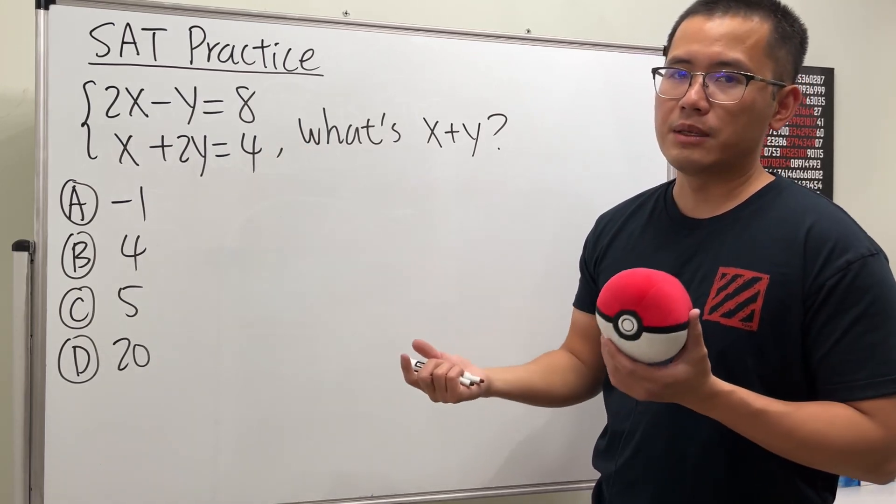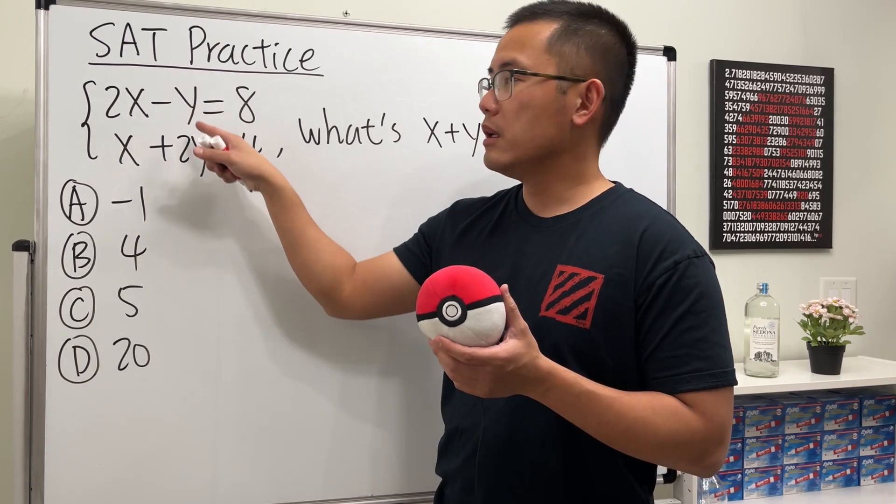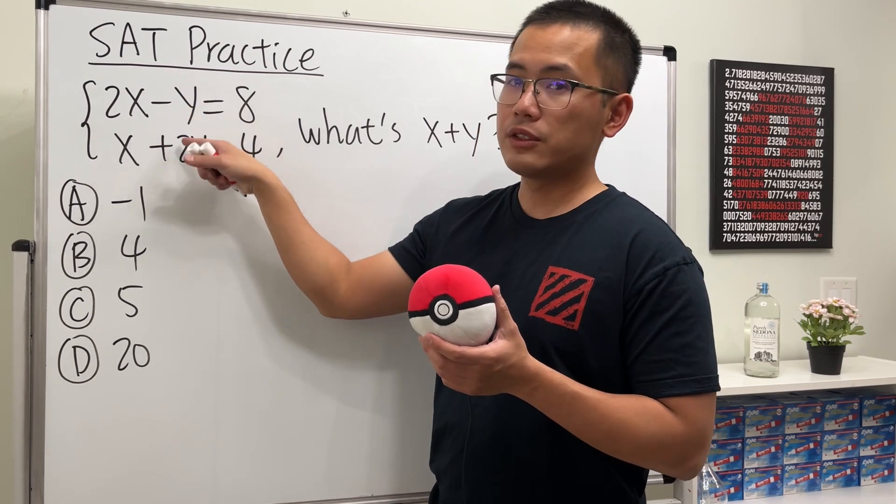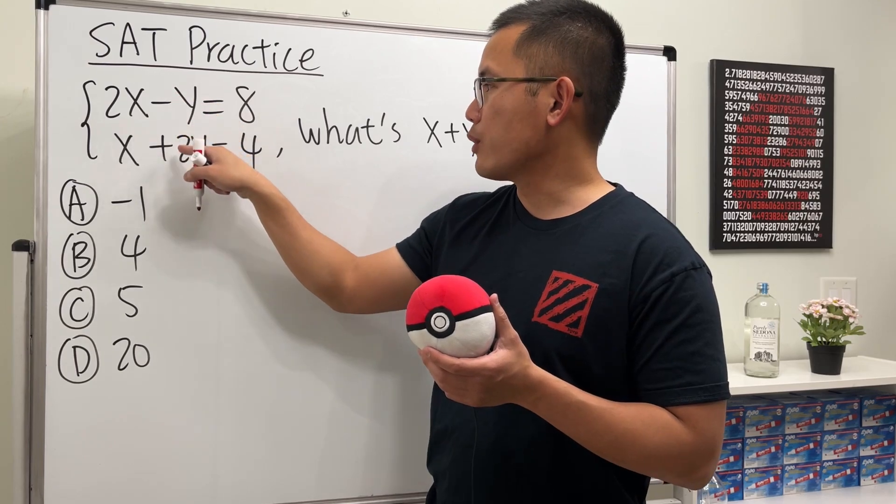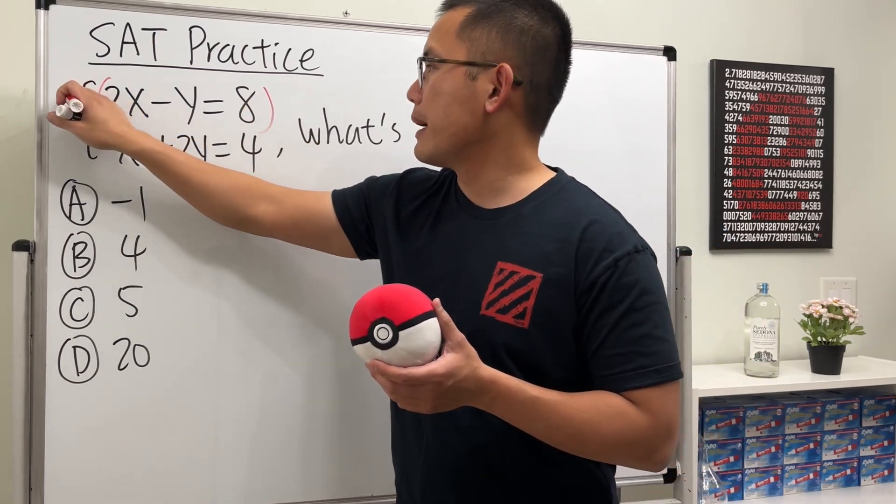The good thing is that this is negative y and this is positive 2y, so the signs are different. That's good. We just need to make the coefficients right here the same. We need to have a 2, therefore let's multiply everybody right here by 2.